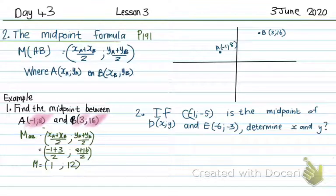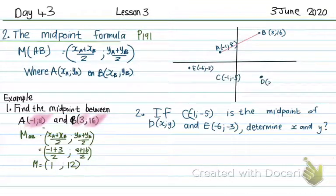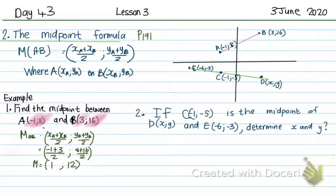Now they are asking it the other way around. They are giving me the midpoint and asking me for one of the endpoints. So C(-1, -5) is the midpoint, E(-6, -3) is at one end, and somewhere point D will be on the other end. I need to find point D.